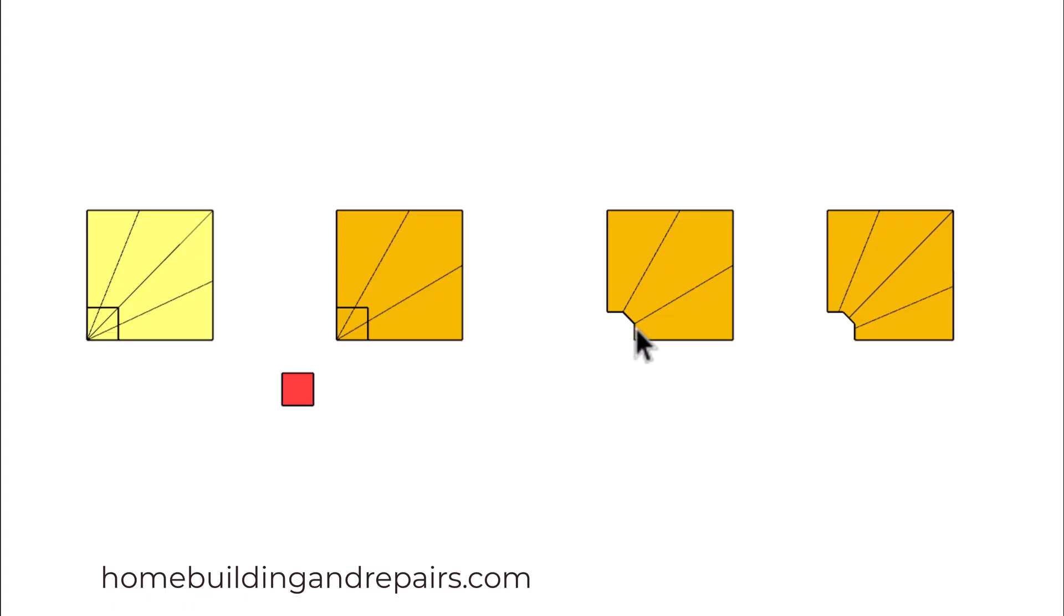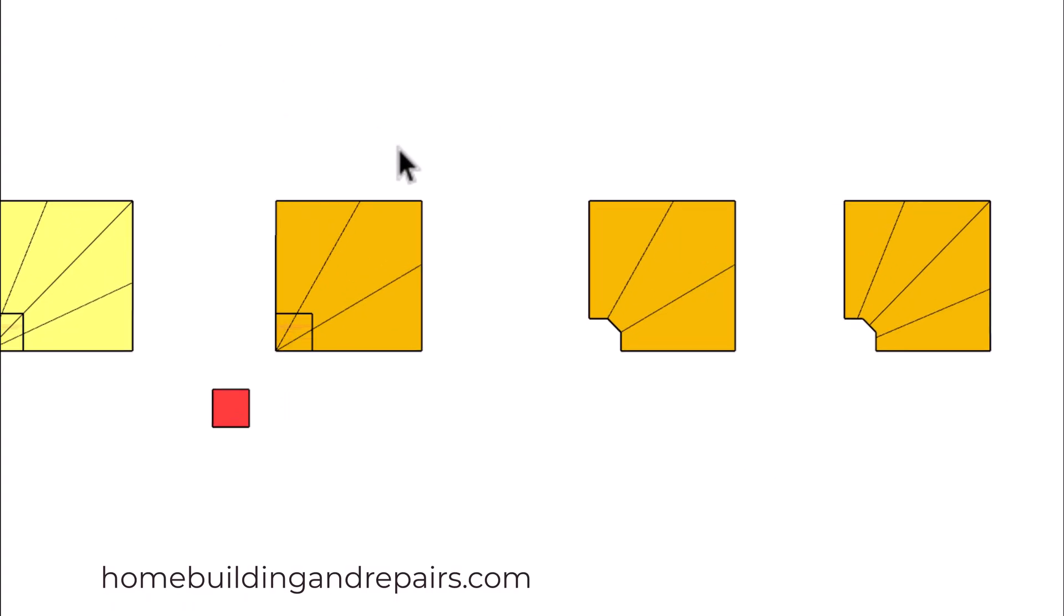For example, do they have a minimum tread measurement and a minimum walk line measurement? Or maybe they don't have either one of them. In which case this design will work and this design will work. But if they do have minimum measurements for the stair tread and a walk line, this one here is going to work and this one here might work.